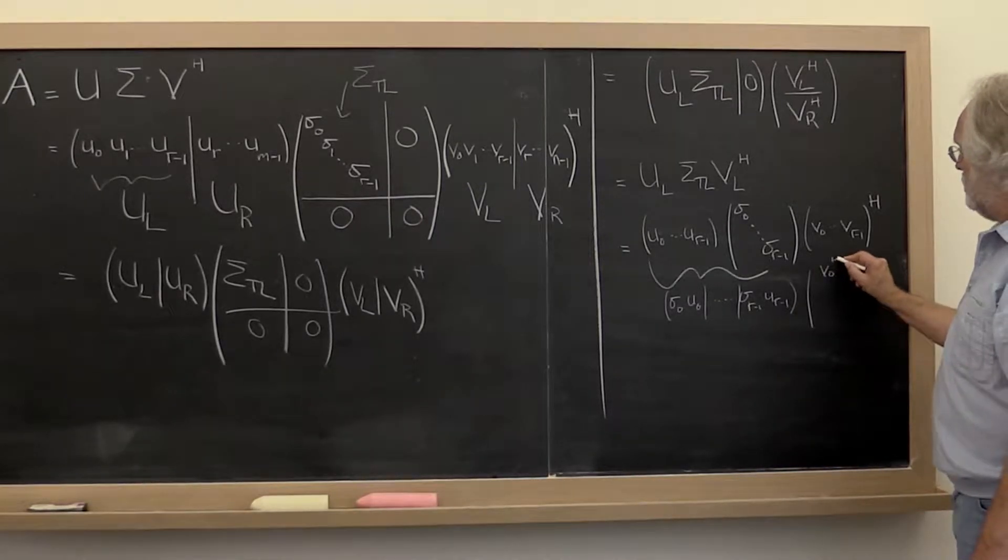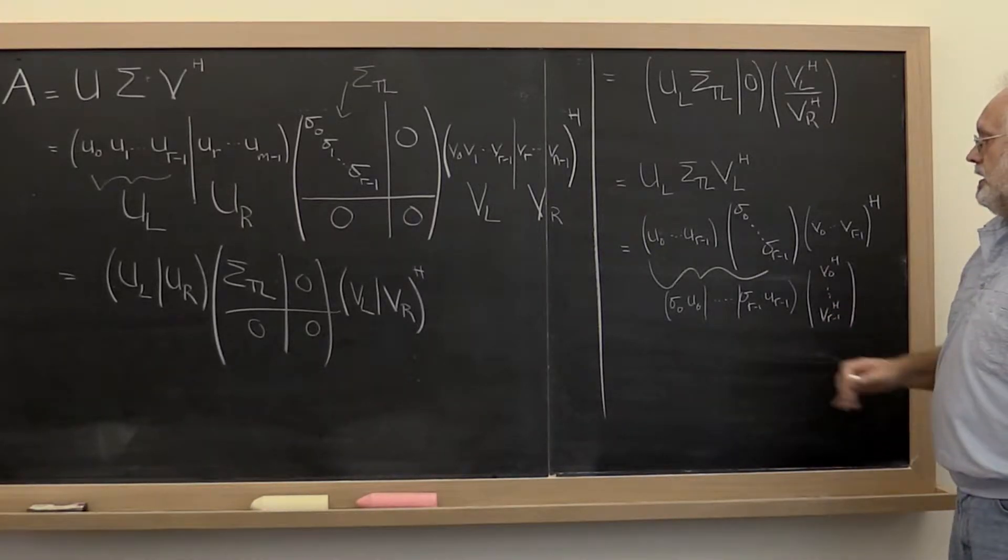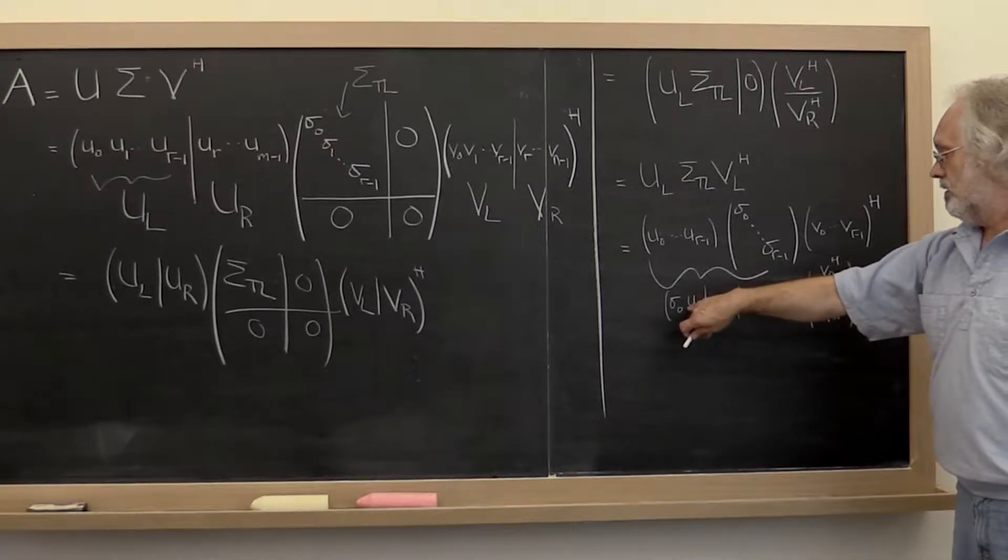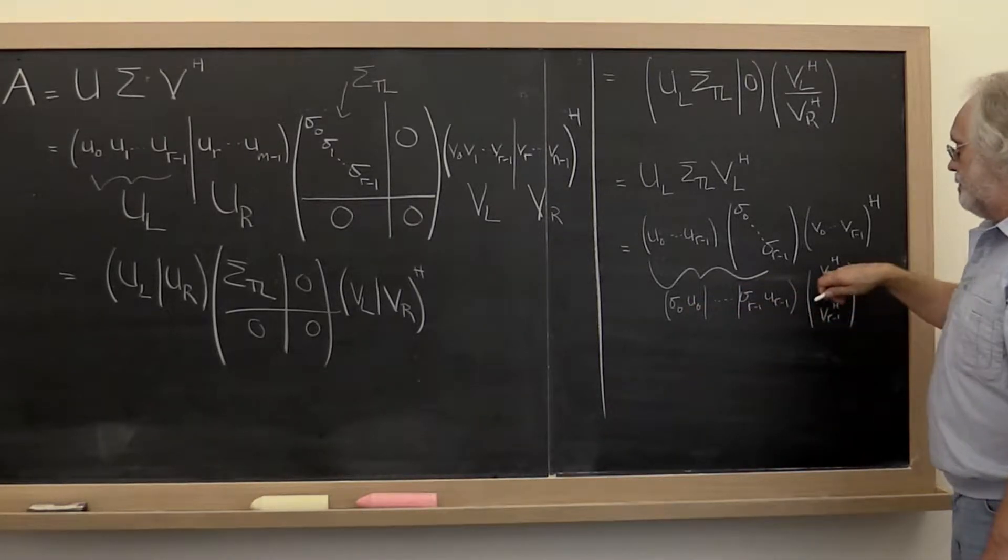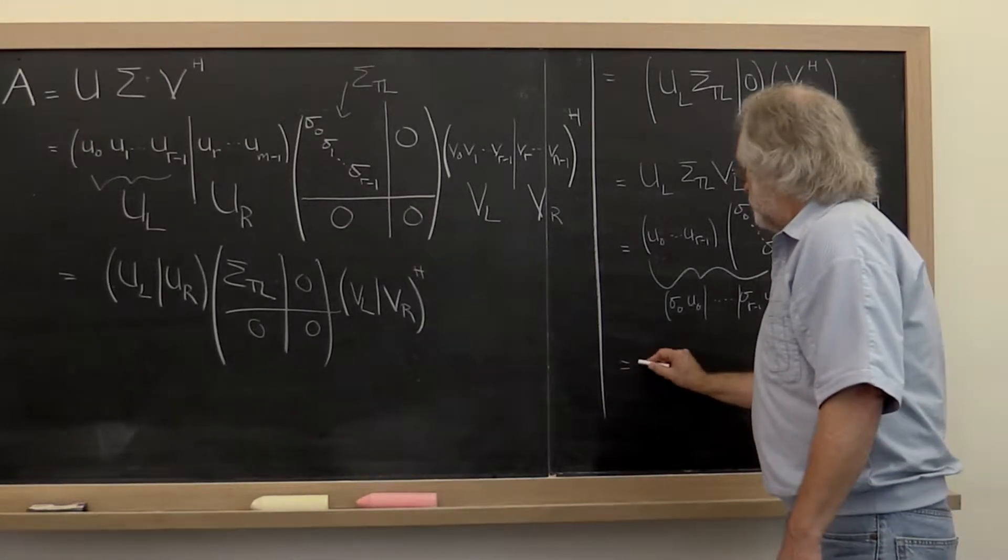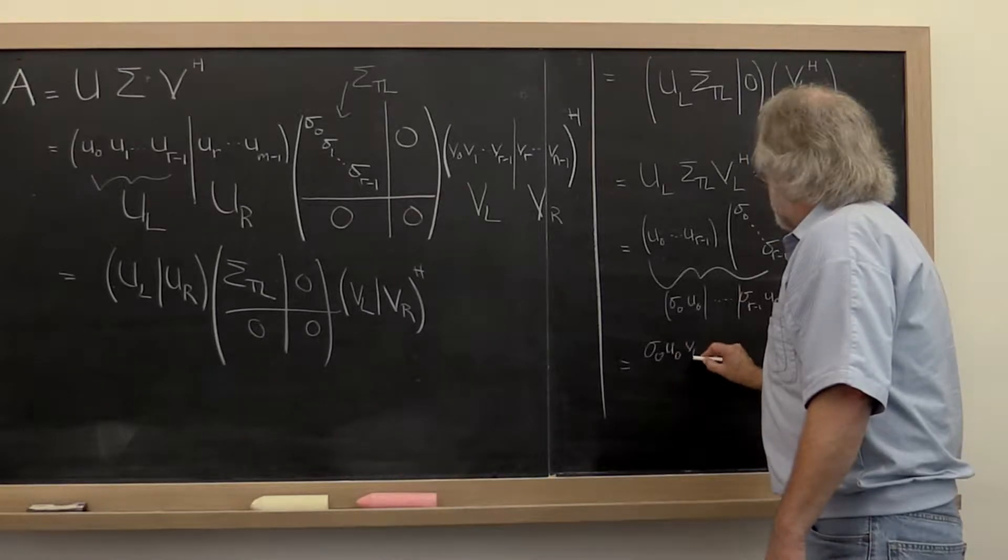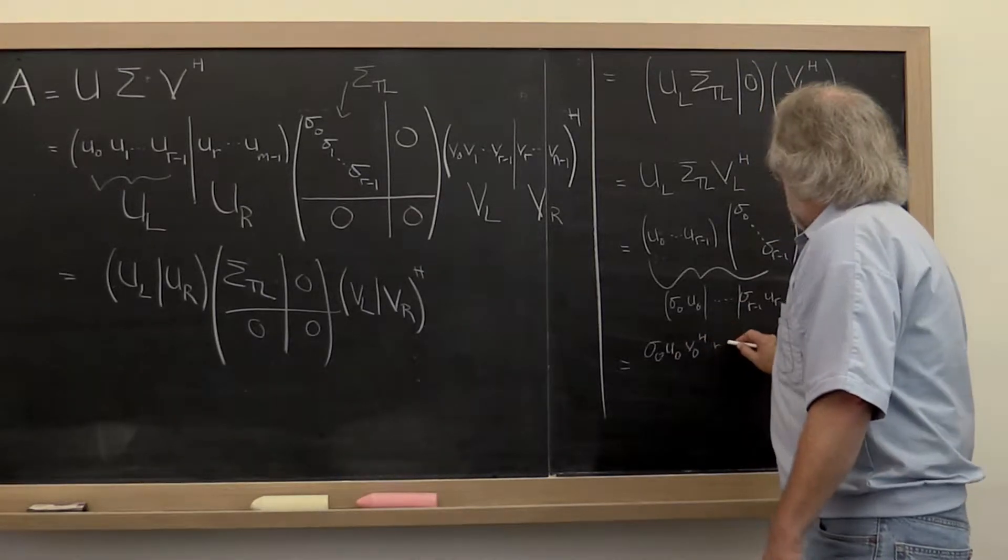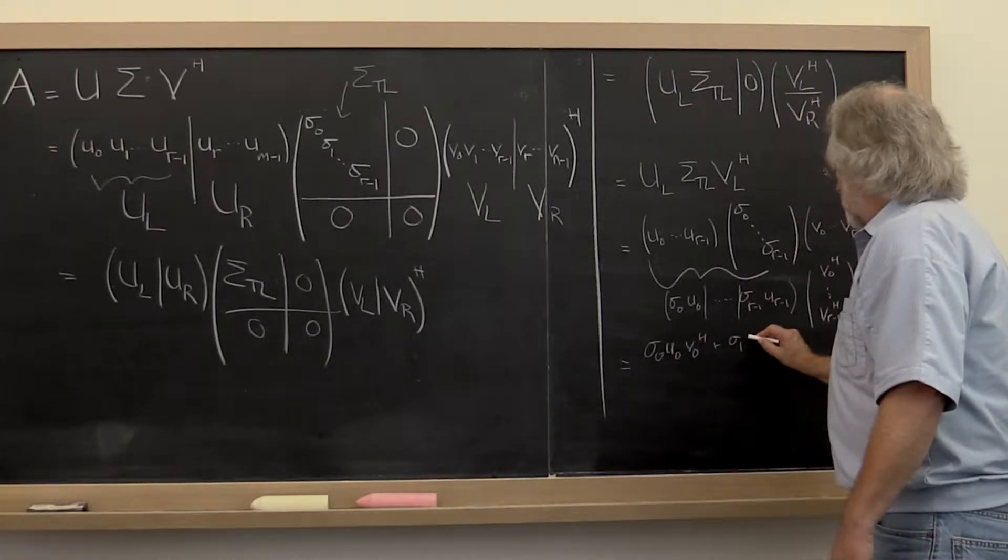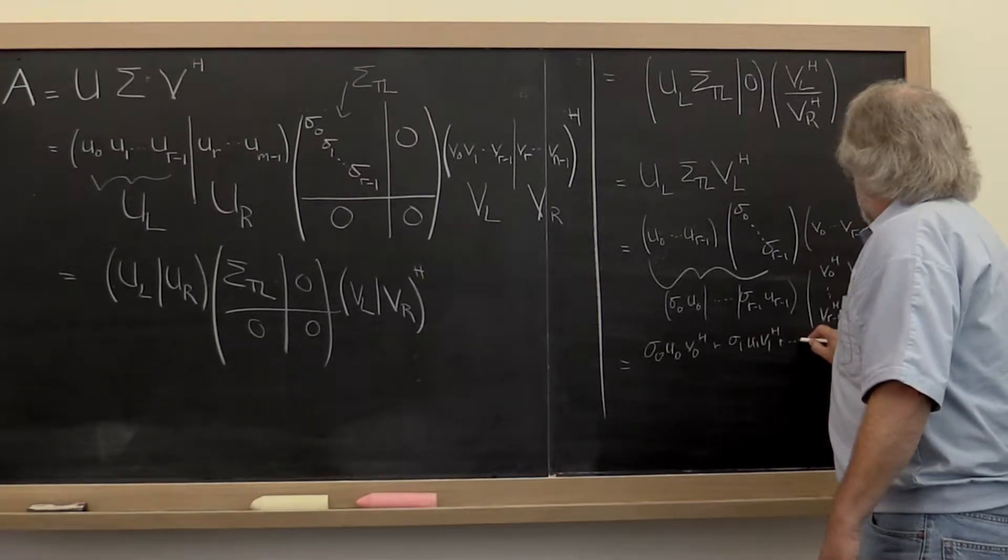And then notice that this here is just the matrix sigma zero times U zero through sigma r minus one times U r minus one. And let's put some bars in here so we know that these are columns of the matrix, times the matrix times V zero Hermitian transpose. And if you multiply that out, you get the first column times the first row plus the second column times the second row and so forth. So you get sigma zero U zero V zero Hermitian transpose plus sigma one U one V one Hermitian transpose and so forth.